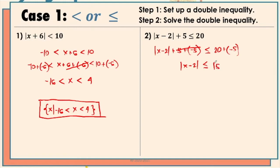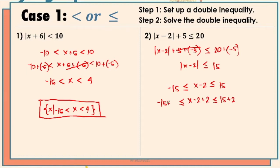Let's start with step 1: set up the double inequality. We have x minus 2 is less than or equal to positive 15 but greater than or equal to negative 15. Next, we isolate the variable in the middle by adding positive 2 on all sides. The middle part now becomes x is less than or equal to positive 17 on the right side, but greater than or equal to negative 13 on the left side. So for the final answer, we have the set of x such that x is less than or equal to positive 17 but greater than or equal to negative 13.